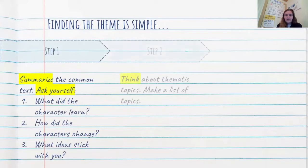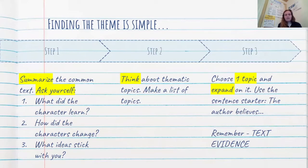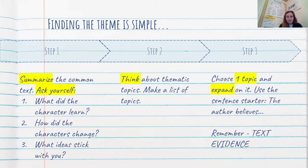This is the chart we have been looking at all week. When we are finding theme there are three steps. The first thing we do is summarize our story and ask ourselves key questions: What did the character learn? How did the characters change? And what ideas stick with you? The second step is to make a list of thematic topics. The third step is to choose one of those thematic topics and expand on it using the sentence starter 'the author believes,' explaining what they believe based on the text. Make sure you are remembering to use text evidence.